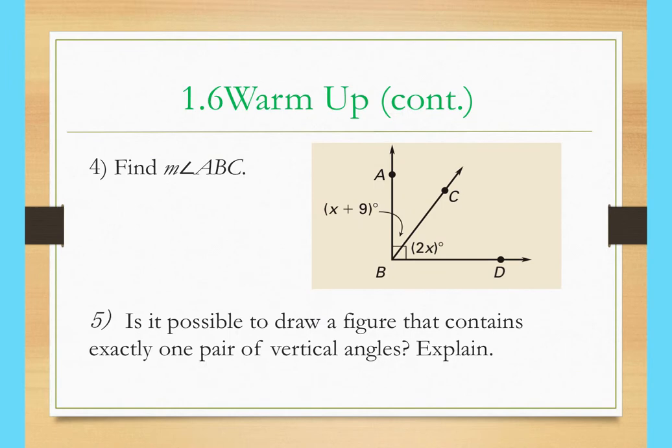A student answers that X plus 9 plus 2X equals 90. The teacher confirms this is correct since it's a right angle marked in the diagram. Working through the problem: X plus 9 plus 2X equals 90, which means 3X plus 9 equals 90, so 3X equals 81 and X equals 27.